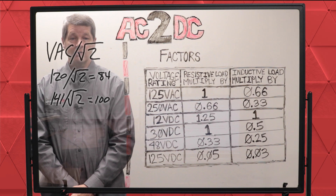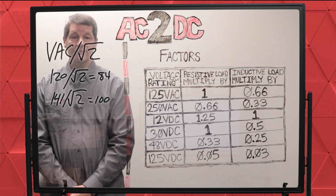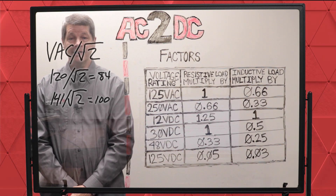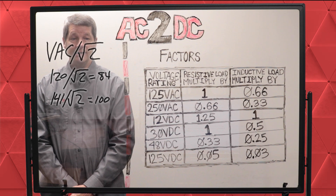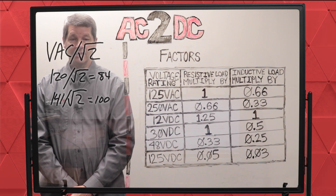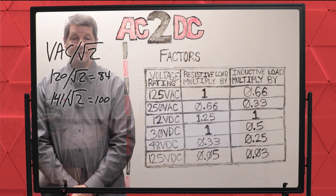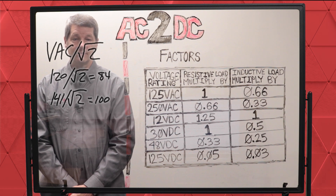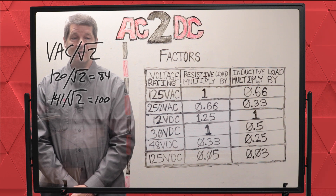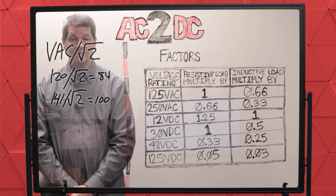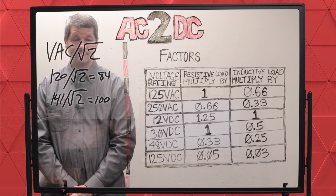This equation also allows us to work backwards from knowing the DC requirement to calculating the necessary AC. Keep in mind that the actual DC output will be less than the final calculation. The DC voltage you calculated is simply the theoretical voltage. Currents have a voltage drop when connected to a device, so it won't have the full amount you've calculated for. Only hypothetical conversions maintain 100% efficiency.